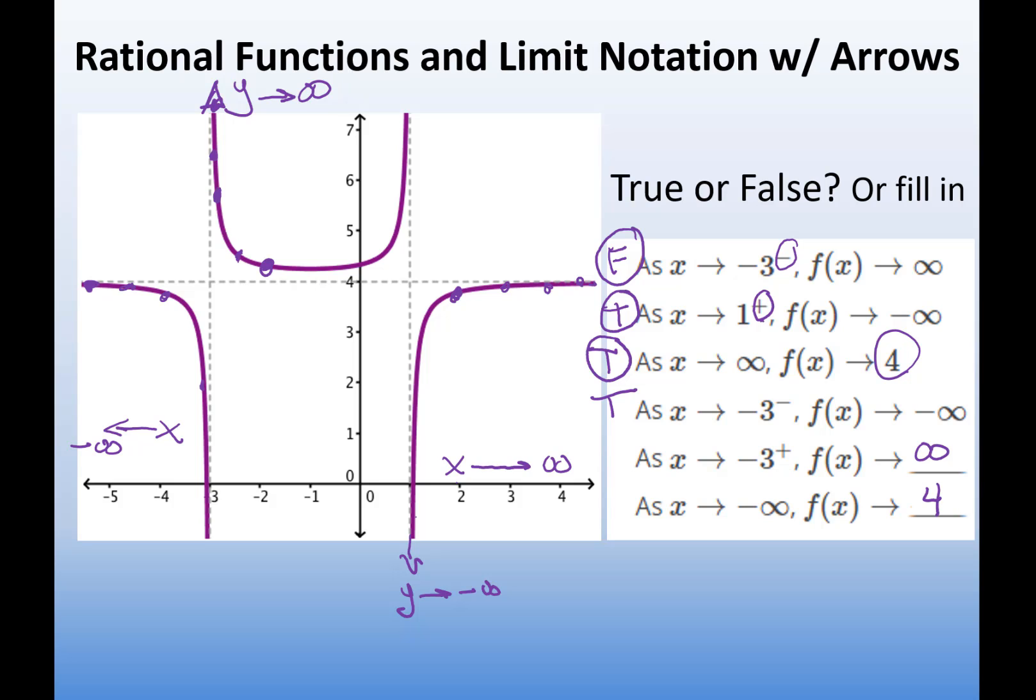So, that's how we use the arrow notation to communicate the different tail behaviors. We have tails at asymptotes. These are all asymptote tails. But we also have tails at the end behavior. So, those tails I want you to be able to understand and communicate to me about with this arrow notation.